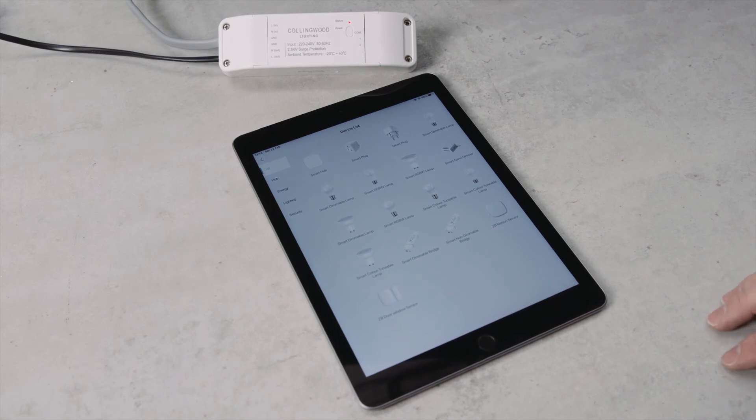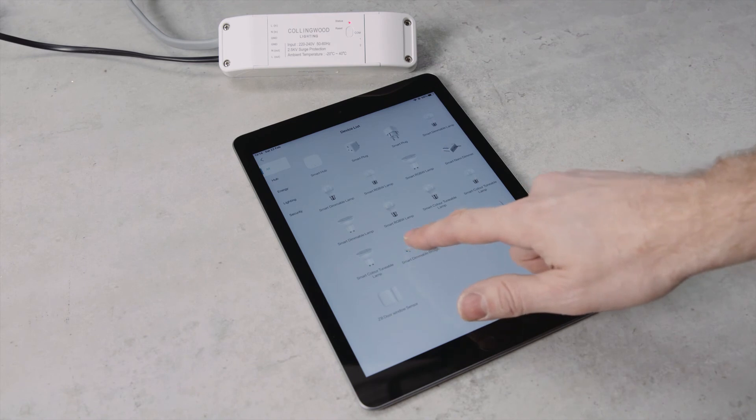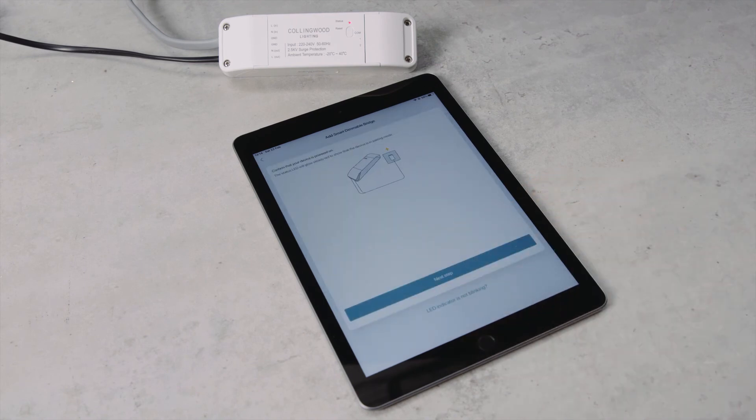Select between the smart dimmable bridge or non-dimmable bridge, depending on which product you've installed. Then follow the steps on screen.